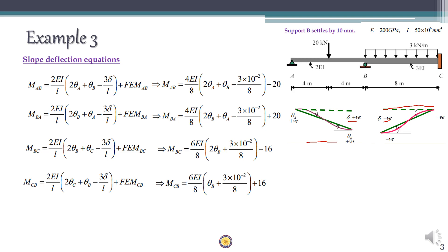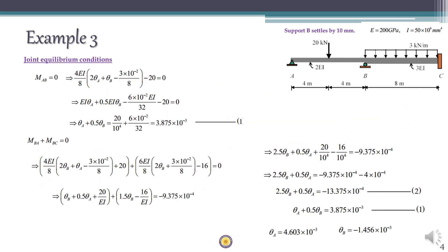When substituting in the slope deflection equation, for span AB delta is +10 and for span BC delta is −10 millimeters, converted to meters as 10 × 10⁻³ m. Write MAB = (2EI/L)(2θ_A + θ_B − 3δ/L) + FEM. Here θ_A and θ_B are unknown, θ_C is zero, and delta values are already known.